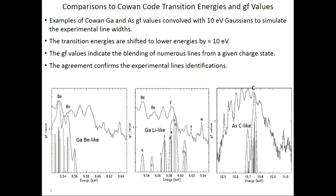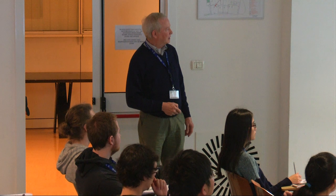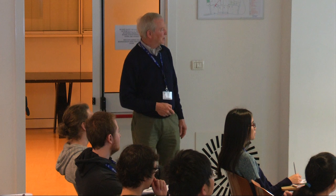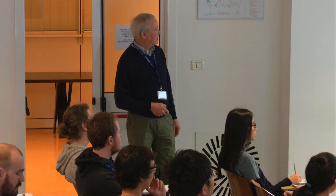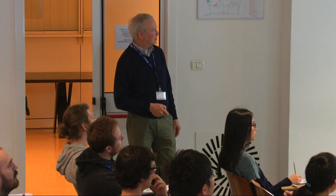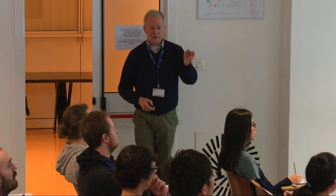Let's look at the GF values from the Cowan code website. These sticks represent the GF values, which give an indication of relative spectral line intensities. Here are the GF values convolved with a 10 eV Gaussian to simulate the experimental spectrometer resolution for the gallium lithium-like transitions, alongside the experimental spectrum. With this 10 eV shift, you can see the matching starting to emerge. Here are the gallium beryllium-like transitions and the arsenic carbon-like transitions — the assignments of all those spectral features look good.